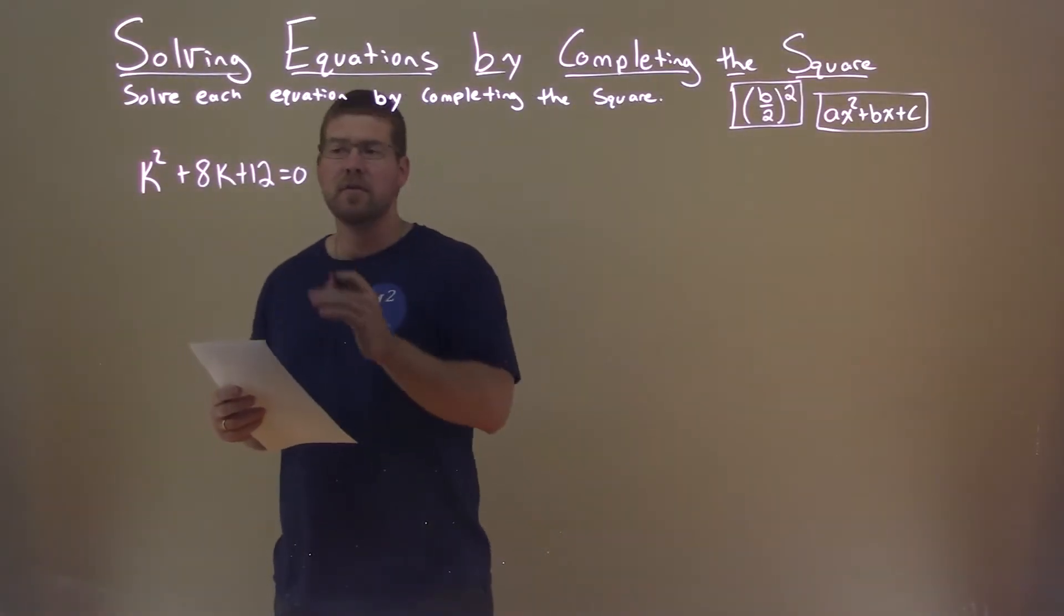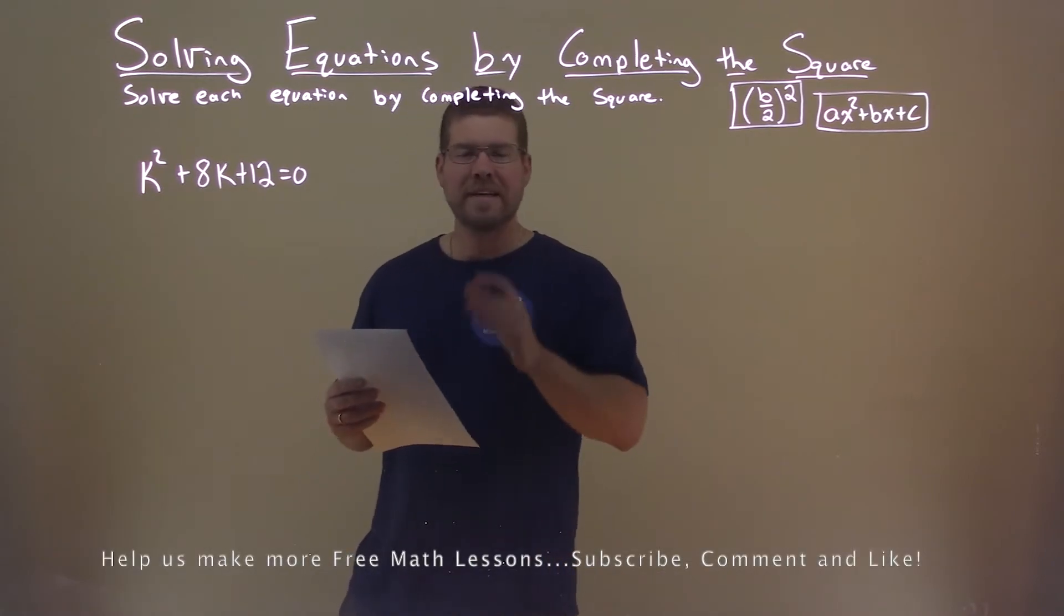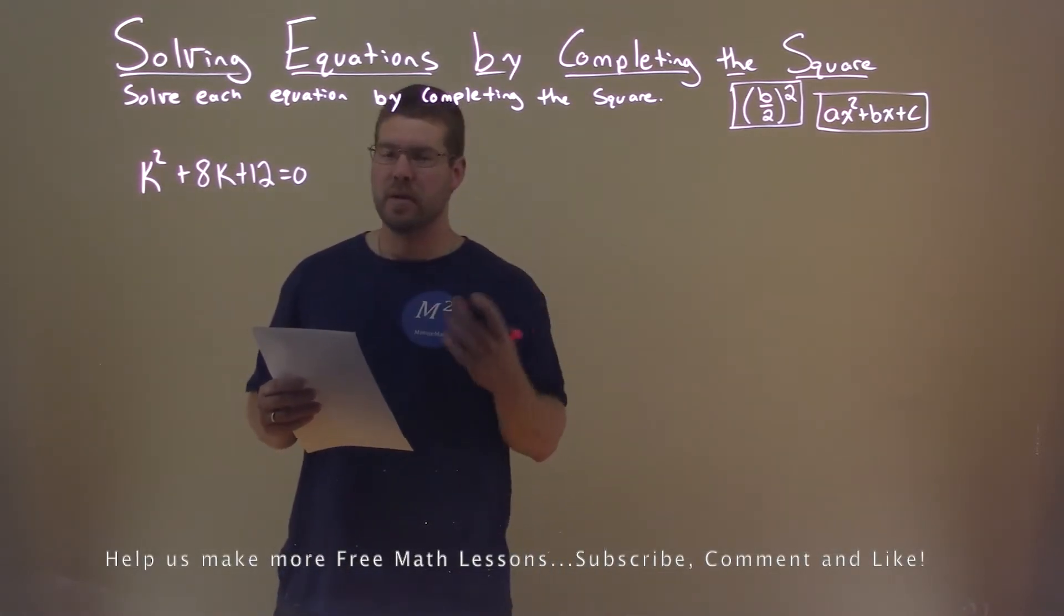We're given this problem right here. K squared plus 8k plus 12 equals 0, and we need to solve this by completing the square.